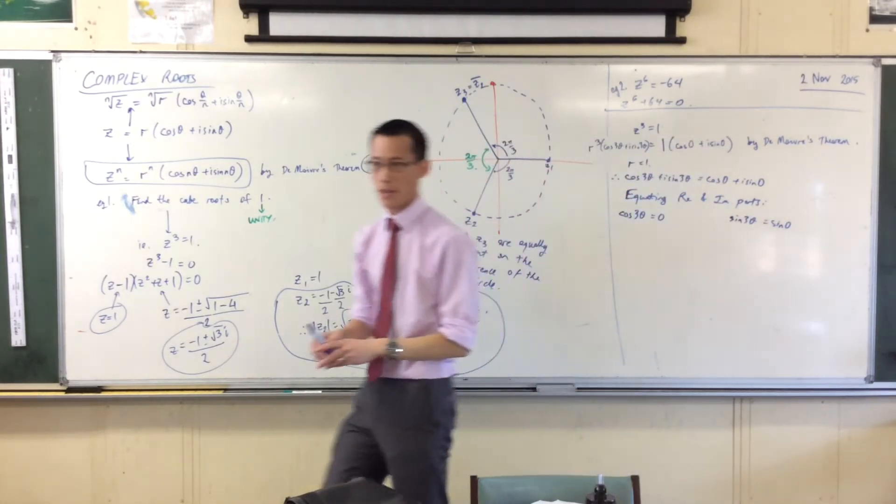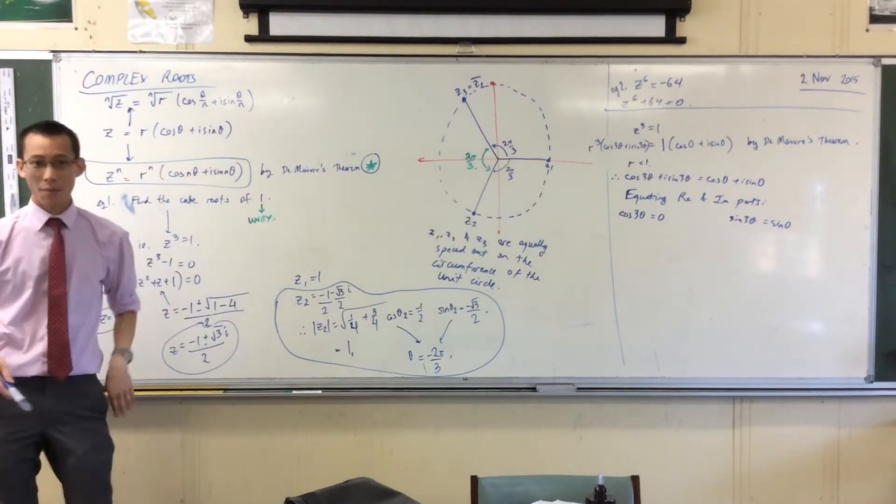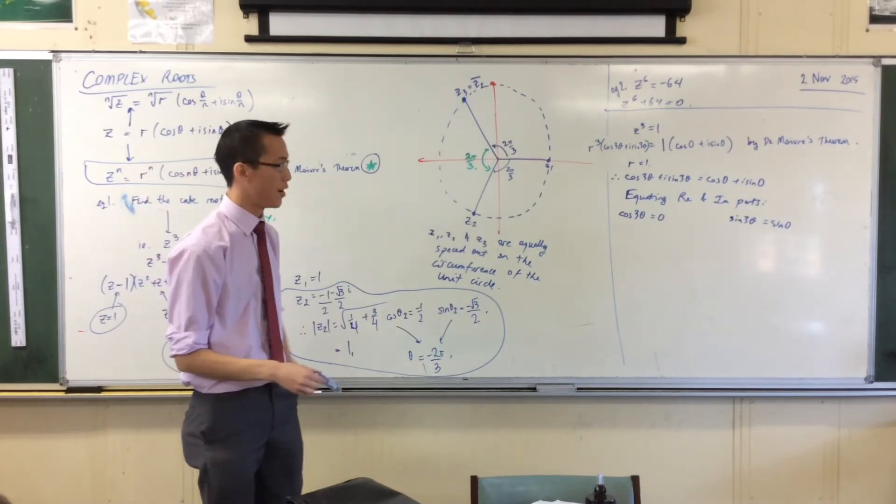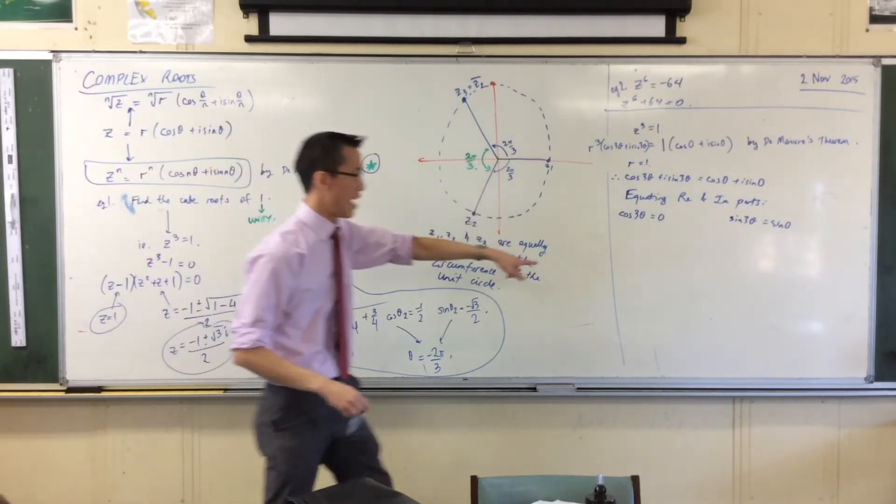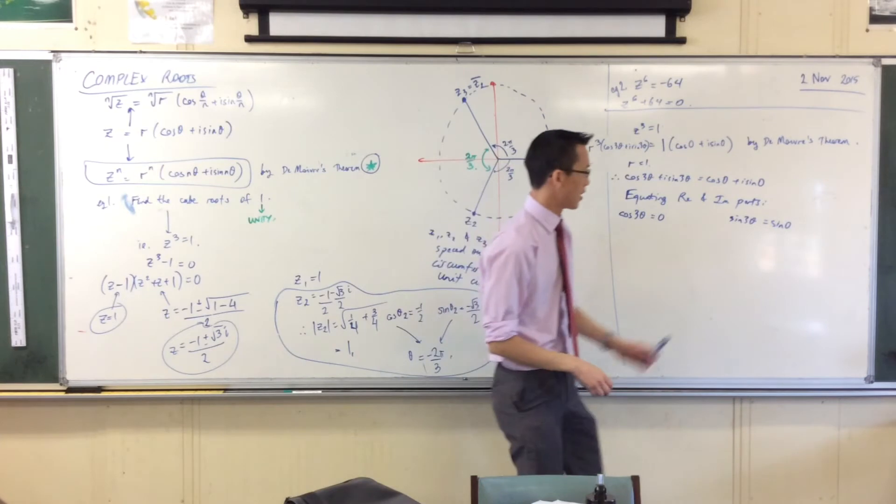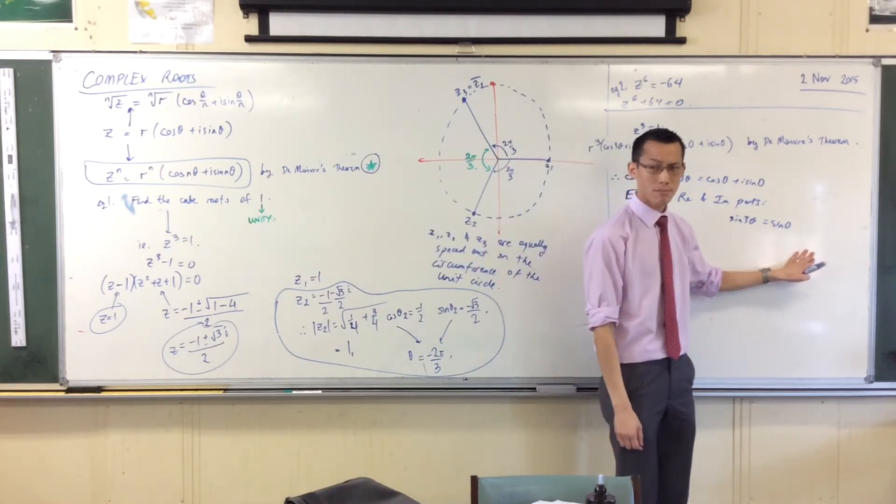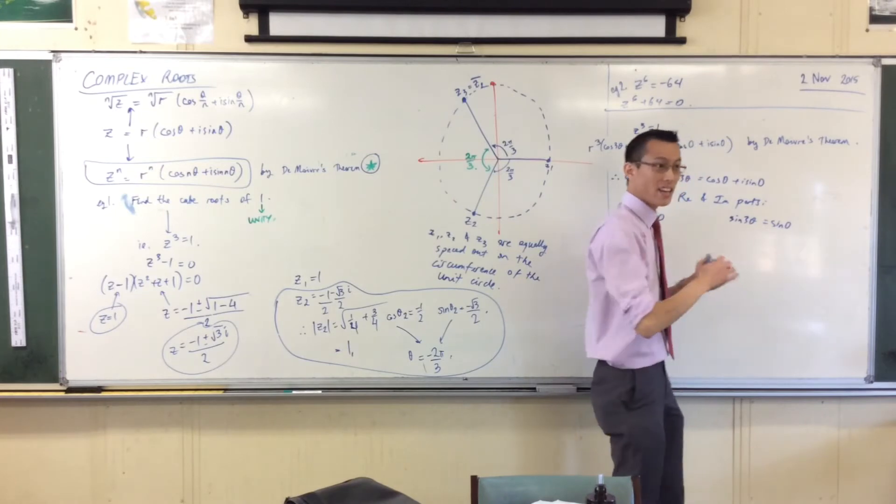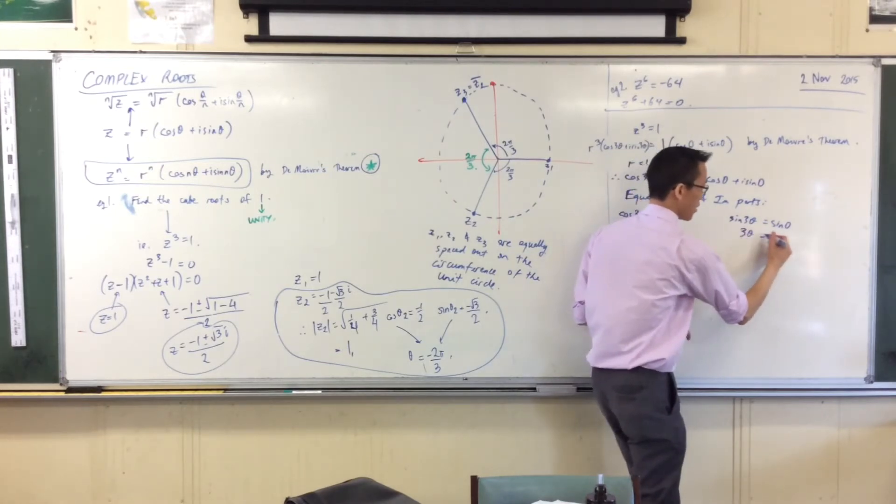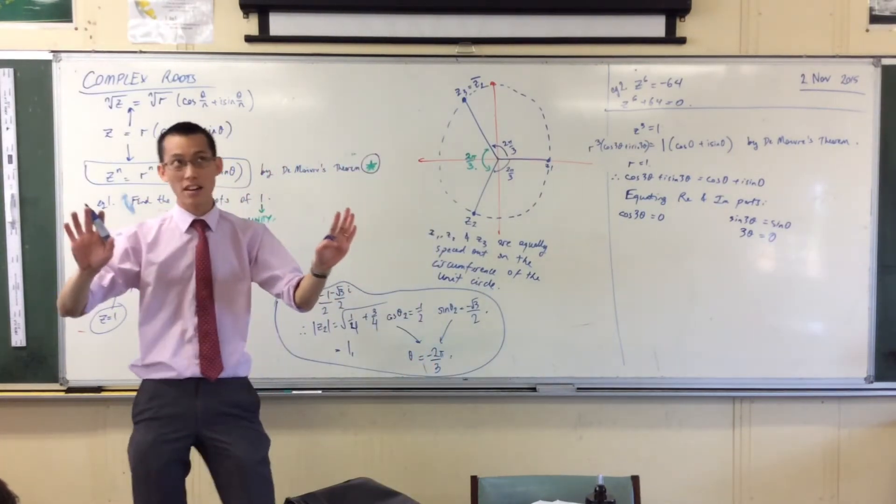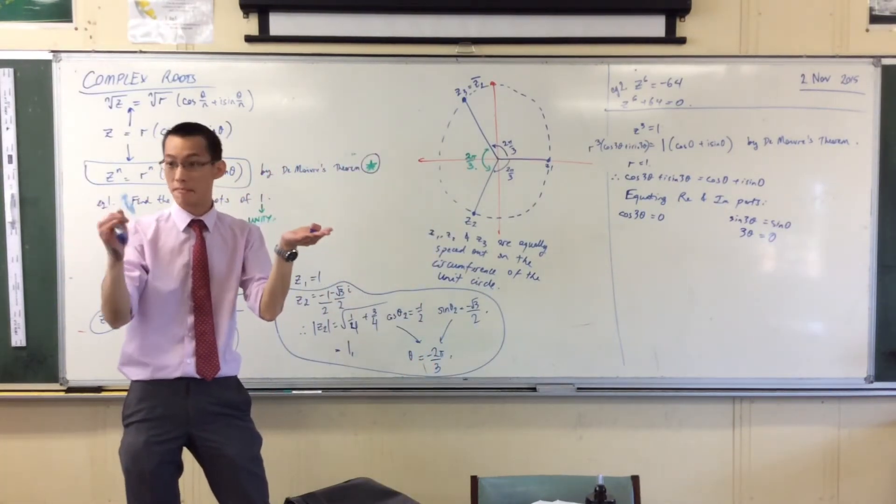For reasons that I hope will become clear, I'm going to do the right-hand side one first, using the imaginary part of the equation. If you've got sine of something equals sine of something else, then clearly one solution is where those two things are the same.